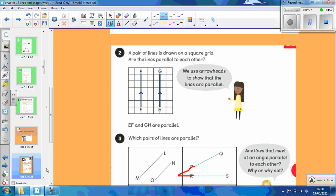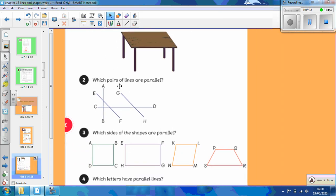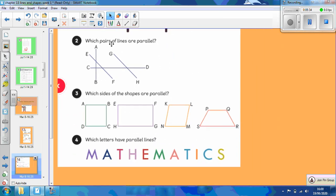So let's start our guided practice on question 2 again today. So we want to know which pairs of lines are parallel, which sides of the shapes are parallel, and which letters have parallel lines, just like yesterday. But we were doing it with perpendicular lines yesterday. Today we are doing it with parallel lines, equally spaced out lines that will never meet each other.